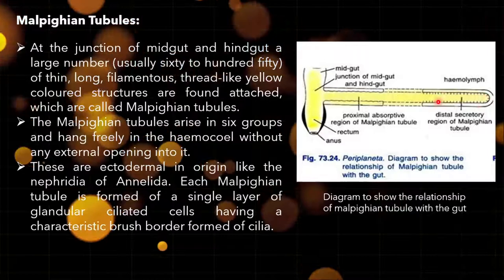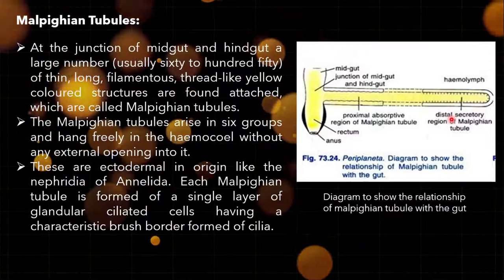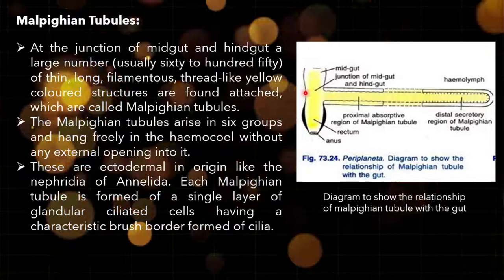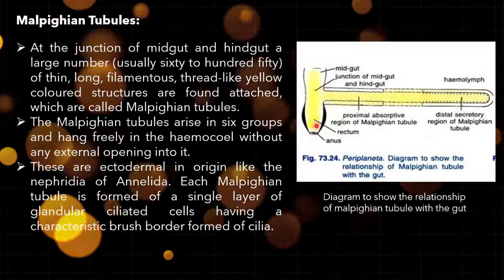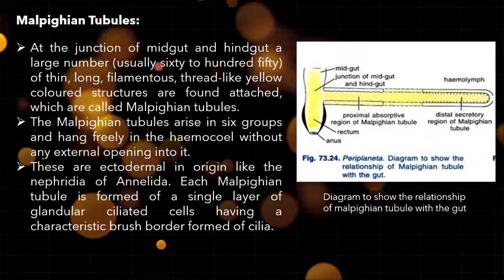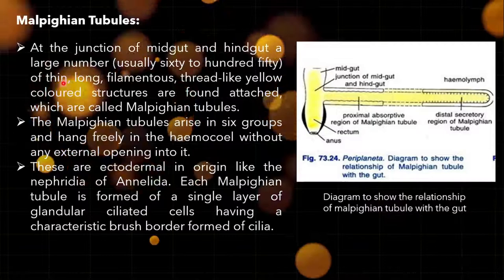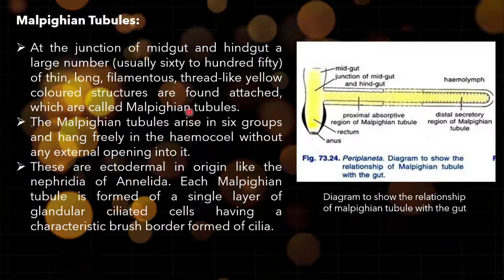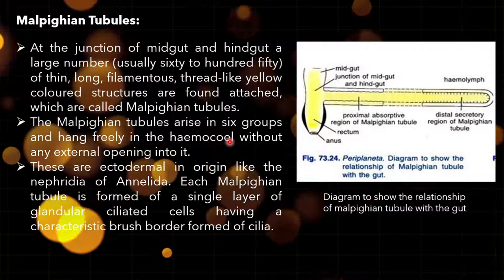At the anterior end of the Malpighian tubule, salts and water from the hemolymph are absorbed, processed, and propelled into the hindgut, while waste is excreted. At the junction of midgut and hindgut, a large number — usually 60 to 150 — of thin, long, filamentous, thread-like, yellow-colored structures are attached, called Malpighian tubules. They arise in six groups and hang freely in the haemocoel without any external opening.